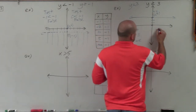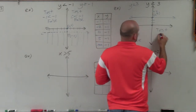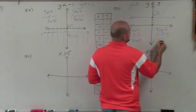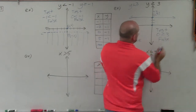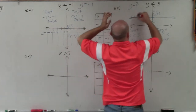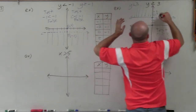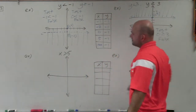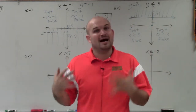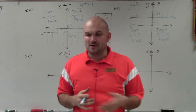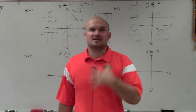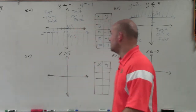Then I'll test (0, 0) to determine where to shade: 0 is greater than or equal to 3 — is that true? No, that's false. Since (0, 0) is below the graph and false, that means all points above are going to be true, so I shade above. Testing is very important, especially if you're unsure or want to check your work. However, it does take extra time, so I'll go through the next ones a bit quicker.